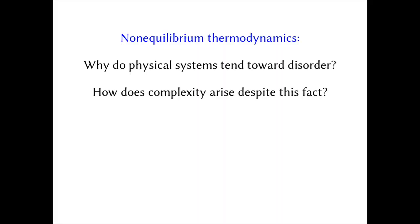I study biological things, and biological things are not entirely disordered. One fascinating aspect of this topic is: despite this tendency toward disorder, why does complexity arise? This leads into very interesting questions — people debate how the second law influences the origin of life. We're going to try to disentangle some of the confusion in that area. And most importantly, as you'll see in the later part of the talk: at what cost? Complexity does exist in nature, but it comes at an inherent thermodynamic cost.